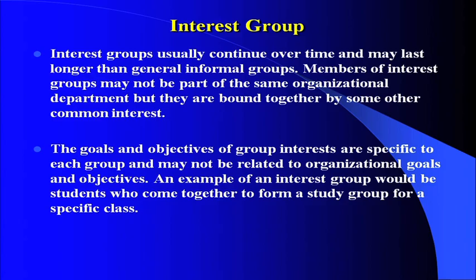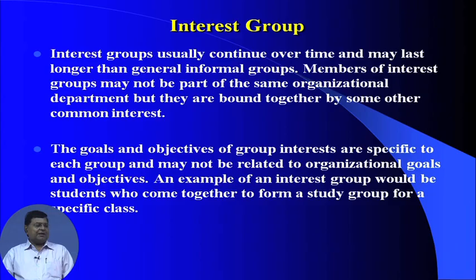The first informal group type is the interest group. People having a common interest form a group. Interest groups usually continue over time and may last longer than general informal groups. Members of interest groups may not be part of the same organizational department, but they are bound together by some common interest. When people have a common interest, naturally they will come together and form a group.